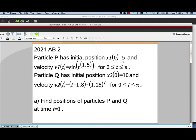The initial position of particle P at time 0 is 5. It has a given velocity function shown here for the interval of time from 0 to π. Particle Q has an initial position of 10 at time 0, a different velocity function over that same interval from 0 to π. In part A, we're asked to find the positions of these two particles, P and Q, at time t=1.